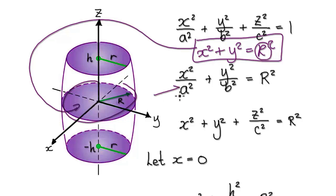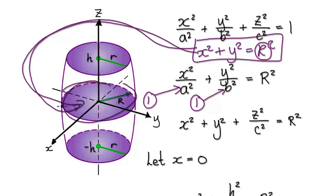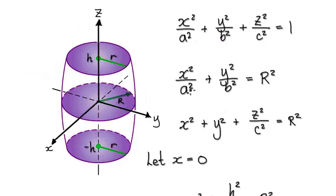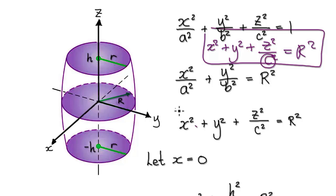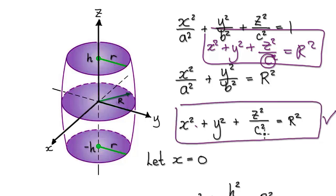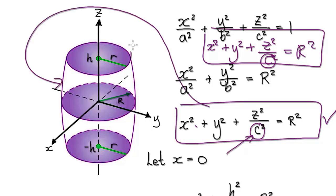Since A must equal B, putting 1 into A and 1 into B satisfies the first part — the big circle. So the first part of the ellipsoid equation becomes: x squared plus y squared plus z squared over c squared equals R squared. We still need to find C to fully define the ellipsoid.